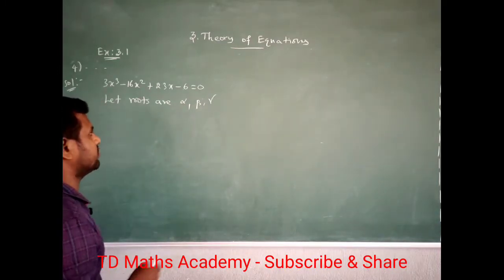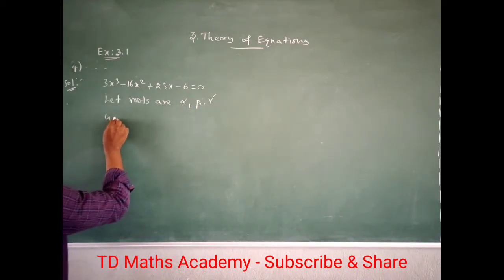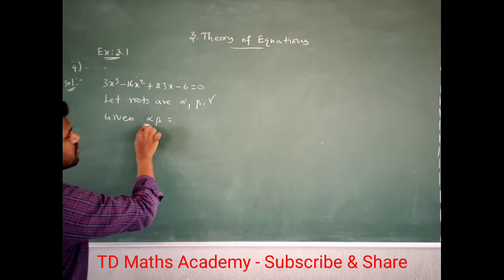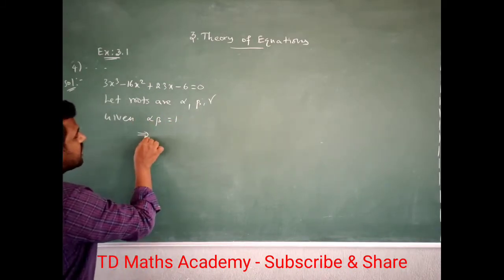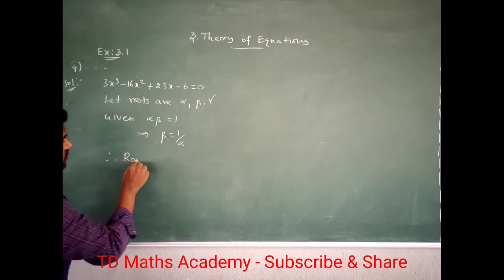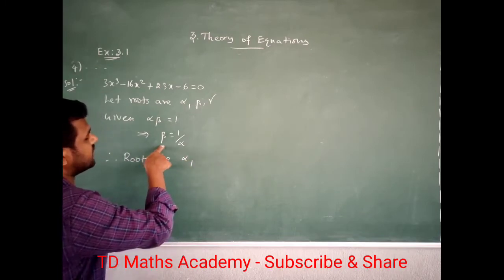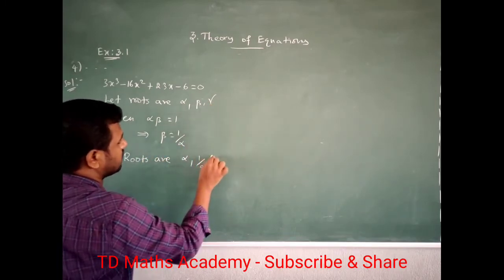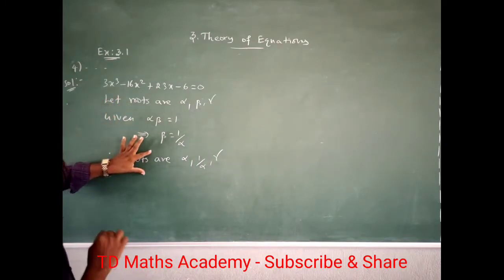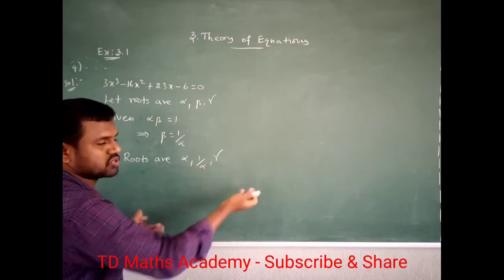There is one extra piece of information: the product of two roots — that is, alpha into beta — equals 1. Which implies we can take beta equal to 1 by alpha. Therefore the roots are: alpha, beta is 1 by alpha, and then gamma. So you have to find alpha value and gamma value — these are 3 root values.